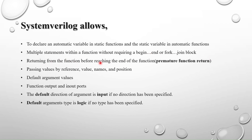Returning from a function before reaching the end is called a premature function return. When the return keyword is reached, execution stops — it will not execute any statements written after the return keyword. For example, if you have multiple lines inside the function and a display statement after the return, that display statement will not execute. The function stops and returns the value at the return keyword.